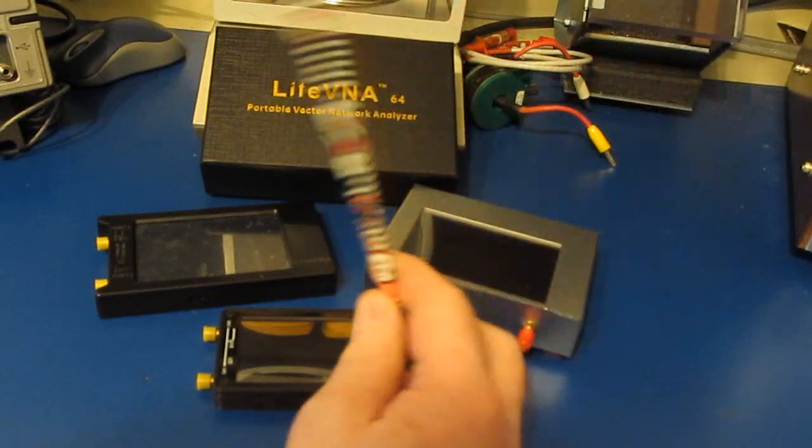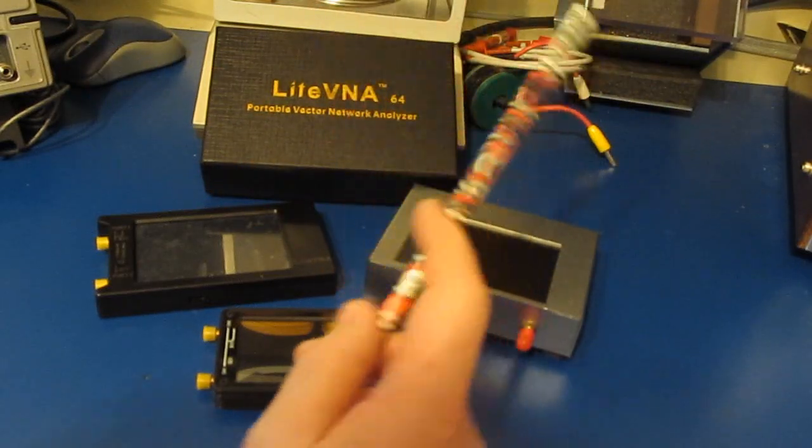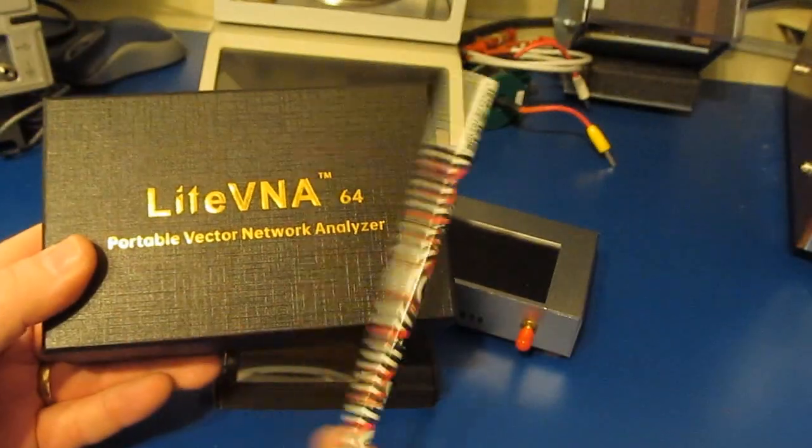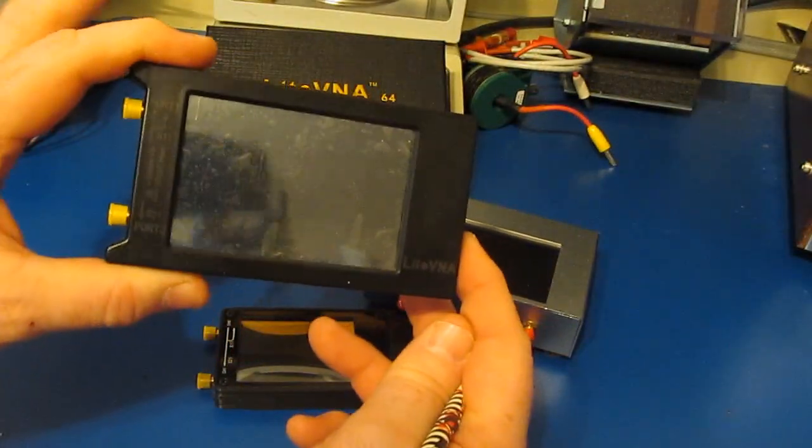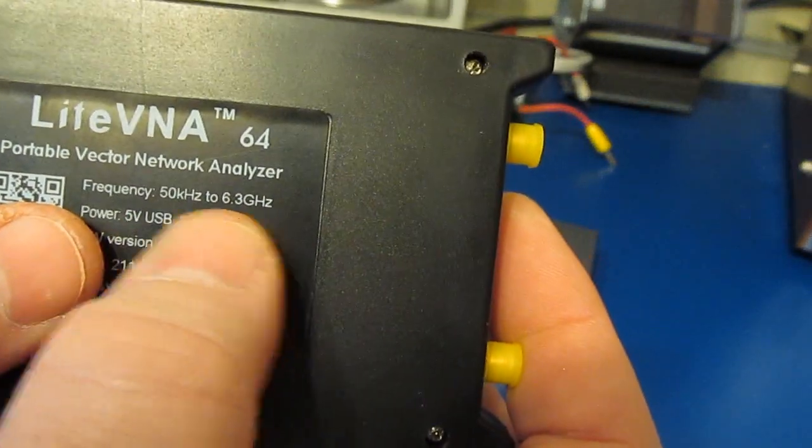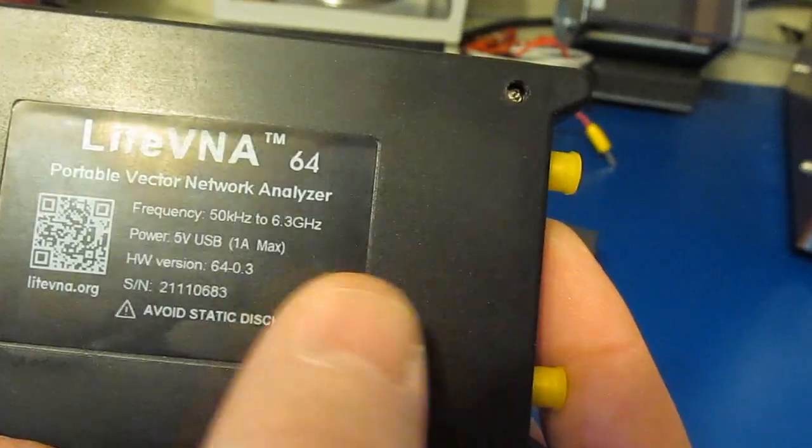Hello and welcome. It's been over a month since we've made a video. You can see I have a new network analyzer, this is the LiteVNA. It has a 4 inch display and the frequency range is 50 kHz to 6.3 GHz.